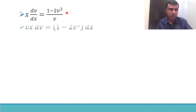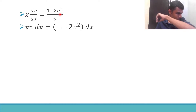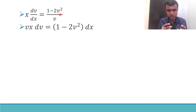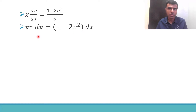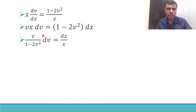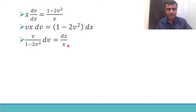Now I'm going to send v here and dx over there. I want all v terms on one side and x terms on another side. I have v and x dv on one side and (1 minus 2v²) on the other. Sending (1 minus 2v²) to the LHS and x to the RHS gives: v divided by (1 minus 2v²) dv equals dx/x. Now just integrate both sides.